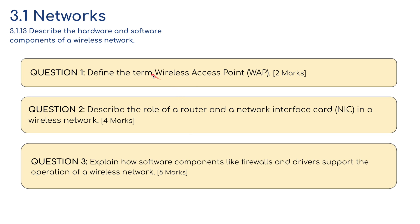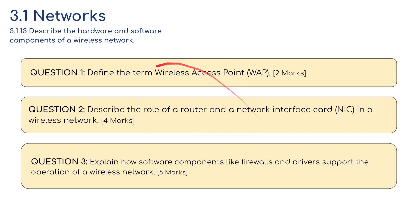I've got three questions. Number one, for two marks: define the term wireless access point or WAP. Question two: describe the role of a router and a network interface card or NIC in a wireless network. Question three, for eight marks: explain how software components like firewalls and drivers support the operation of a wireless network. If you don't want to see the answers yet and want to have a go, please pause the video.